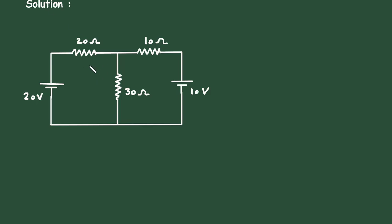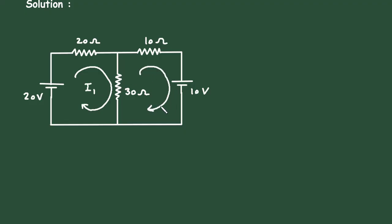Let's say this is mesh number 1 with current I1 in the clockwise direction, and this is mesh number 2, also in the clockwise direction.